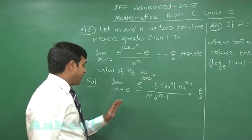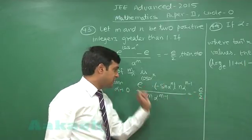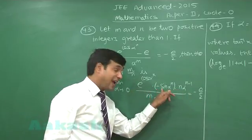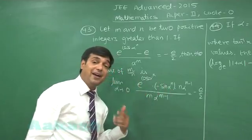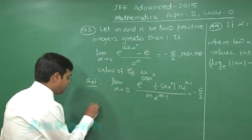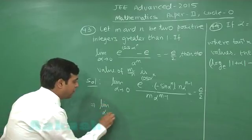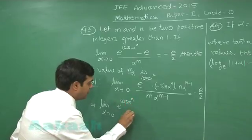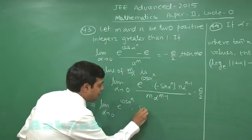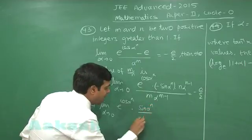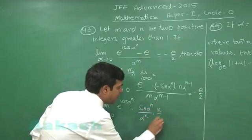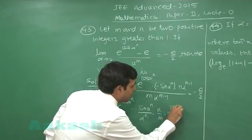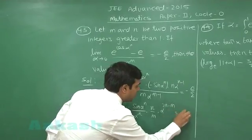If I plan to apply the limit, it will become e to neutralize it, minus is there, n by m will be left. This sin term will be neutralized if I have alpha n in denominator. So, let us rewrite it: alpha approaching to 0, e to the power cos alpha n into sin alpha n by alpha n into n by m into alpha to the power 2n minus m is equal to e by 2.